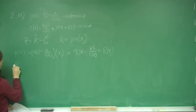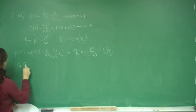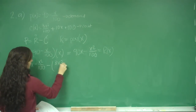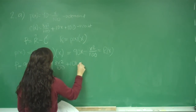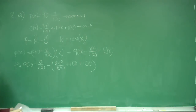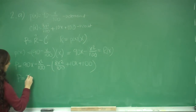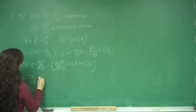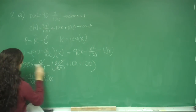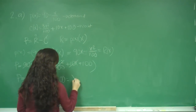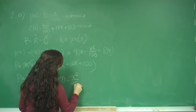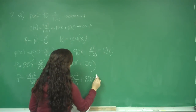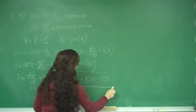So profit equals the revenue function, 90x - x²/100, minus the cost function, which is 3x²/100 + 10x + 100. Now we combine like terms. We get -4x²/100 from the x² terms, then 90x - 10x = 80x, then minus 100. Simplifying -4/100 to -1/25, we get P(x) = -x²/25 + 80x - 100. That is our profit function.